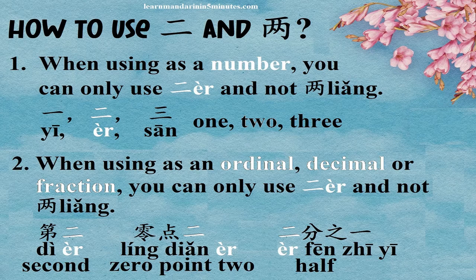When using as an ordinal, decimal, or fraction, you can only use 二 and not 两. For example: 第二, 零点二, 二分之一.